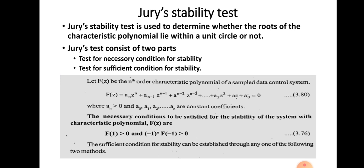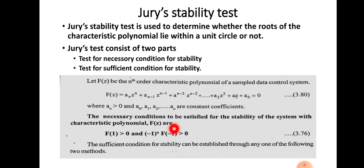Let F(Z) be an Nth order characteristic polynomial of the sample data control system, with the form F(Z) = AN·Z^N + AN-1·Z^(N-1) + ... + A0 = 0. Here AN > 0, and AN-1 through A0 are the coefficients of F(Z). The necessary conditions to be satisfied for the stability of the system are: first, F(1) > 0; and second, (-1)^N · F(-1) > 0.